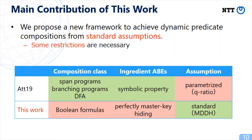Concretely, we need restrictions for the composition class and ingredient ABEs. For the composition class, in Atapadung's framework we can use span programs, branching programs, and DFA for compositions, while we can only use Boolean formulas in our framework. Boolean formulas are included in span programs and branching programs.